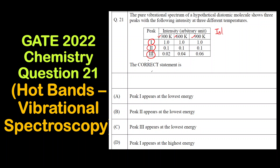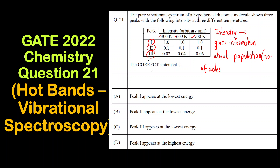First of all, let us understand what is the significance of intensity. What does intensity signify in an IR spectrum? It gives information about the population, or the number of molecules, at a particular energy level. Higher intensity means more molecules are present at that energy level; if the intensity is less, that means the number of molecules are less.